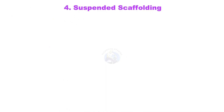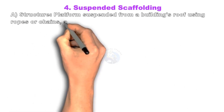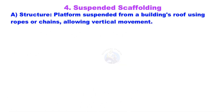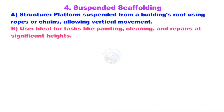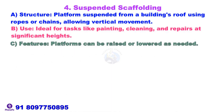Suspended Scaffolding. The platform is suspended from a building's roof using ropes or chains, allowing vertical movement. It is ideal for tasks like painting, cleaning, and repairs at significant heights. Platforms can be raised or lowered as needed.